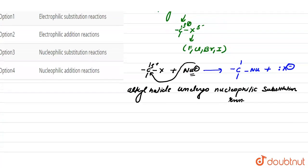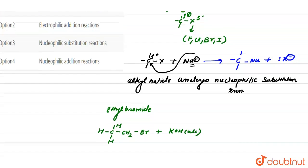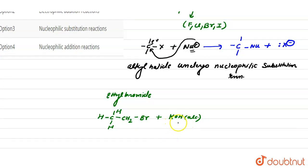For an example of nucleophilic substitution reaction, we take an alkyl halide like ethyl bromide. The structure for ethyl bromide is CH₃CH₂Br — a bromine group attached here. When it reacts with KOH, that is alcoholic KOH, the OH group acts as a nucleophile.